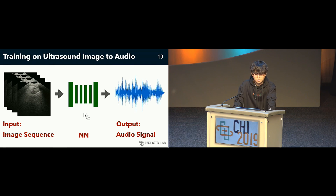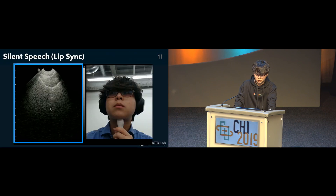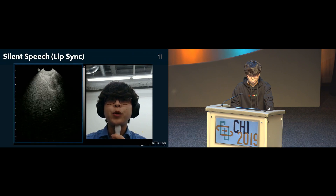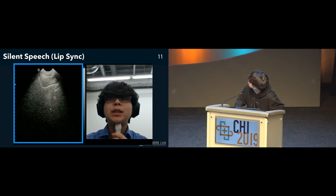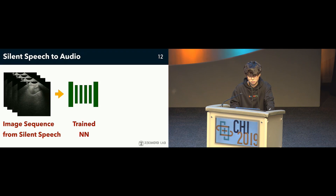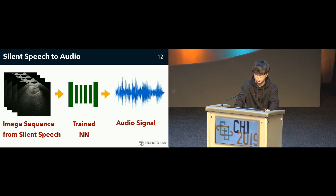We then trained the neural network to estimate speech using the ultrasound images only. After training, we reproduced the same mouth shape as that in the data used for training, but with no sound. The neural network estimates the sound to be uttered from the images. As a result, you can produce speech without leaking sound outside. This is our approach.